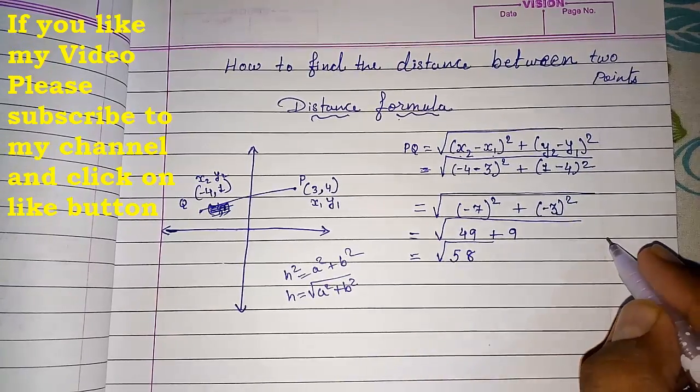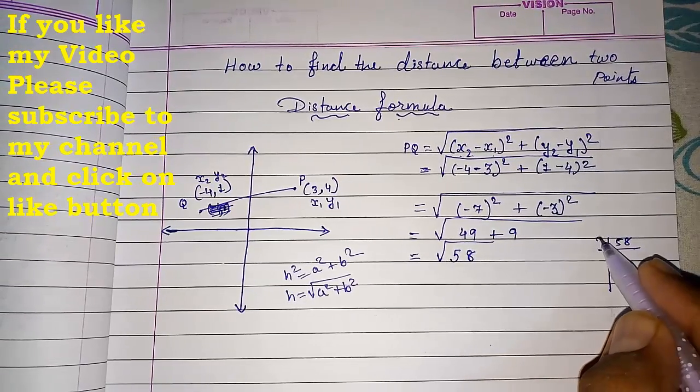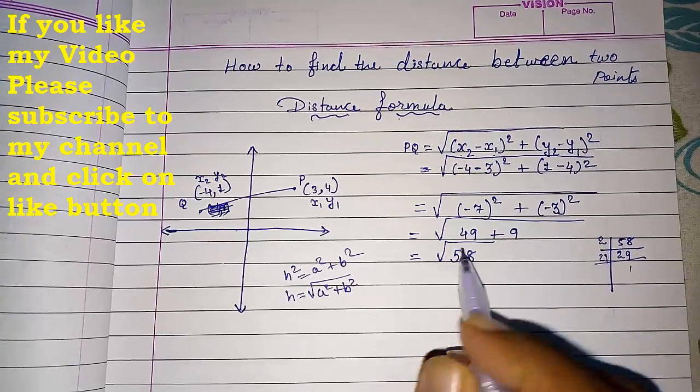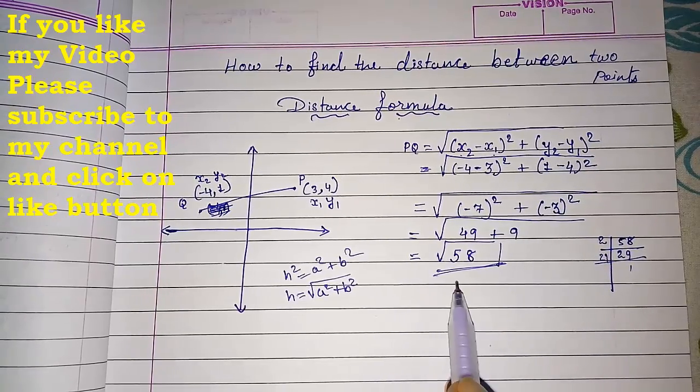We have to see if we can simplify this. So from 58, can we remove any number from it? 58 = 2 × 29. 29 is a prime number. So we cannot remove any root from this. So this is our final answer: √58.